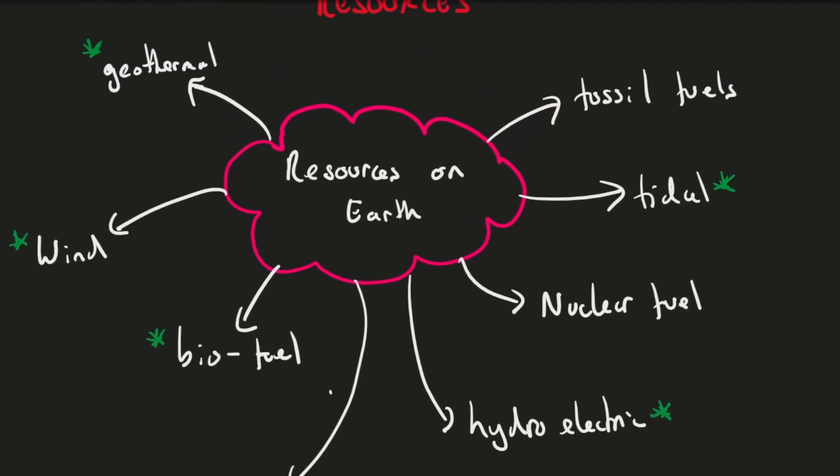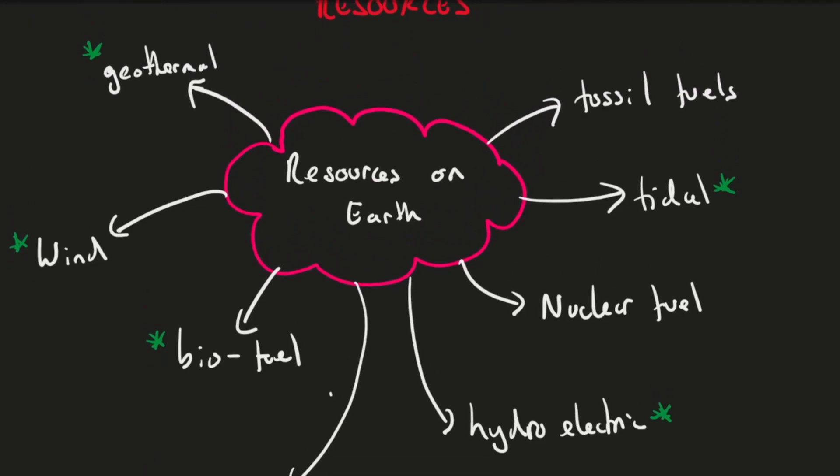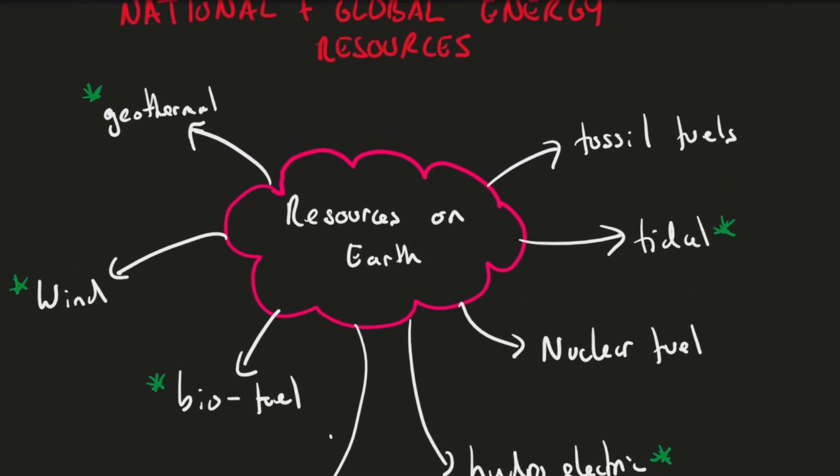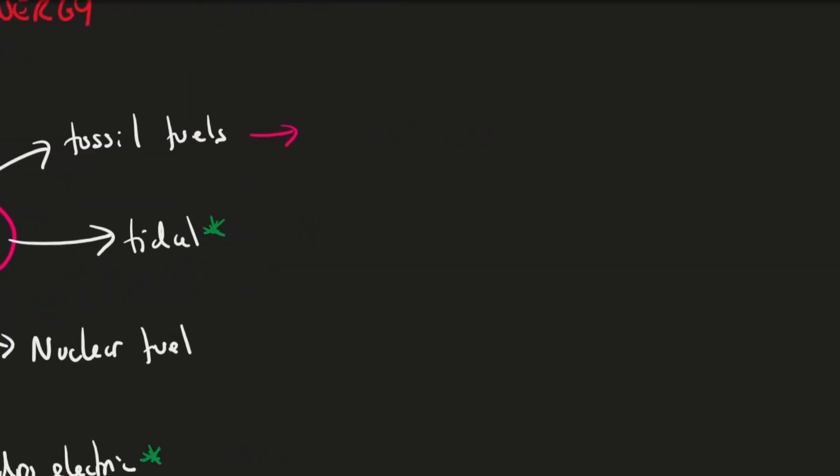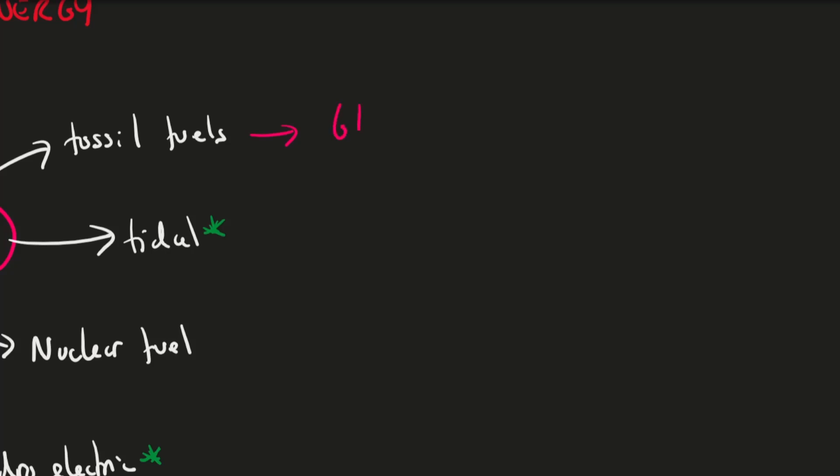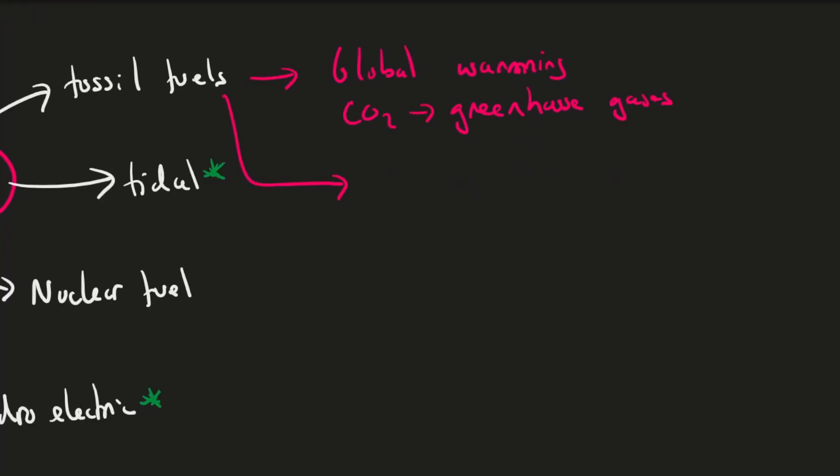And so we talked a little bit about the environmental impact of using these various energy resources. One thing that we didn't go into too much detail was fossil fuels. So fossil fuels can lead to a range of quite damaging environmental impacts. The first one is it can lead to global warming. So fossil fuels release things called greenhouse gases. So things like CO2 is what we call a greenhouse gas. And these greenhouse gases contribute to global warming because they prevent essentially heat from the sun escaping out of our atmosphere, which essentially warms up our earth. It can also cause acid rain.